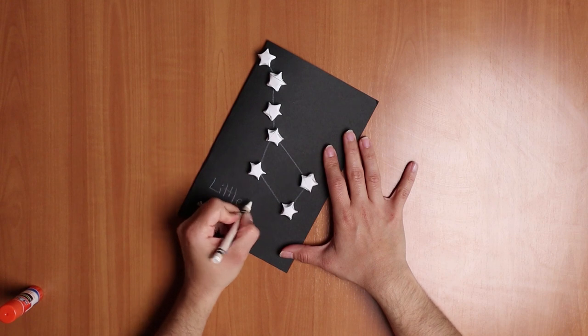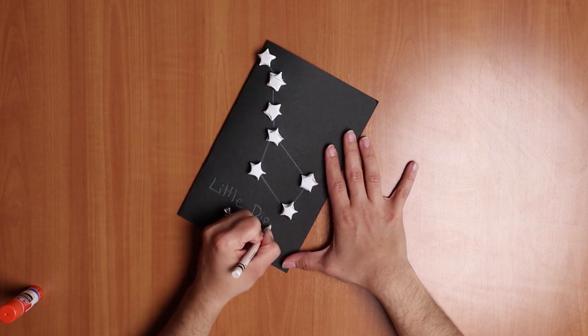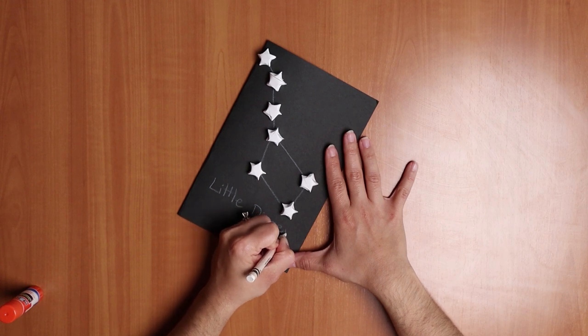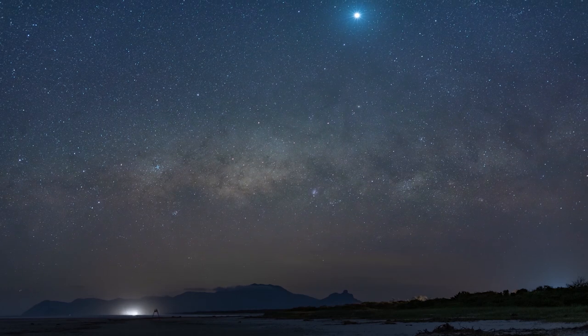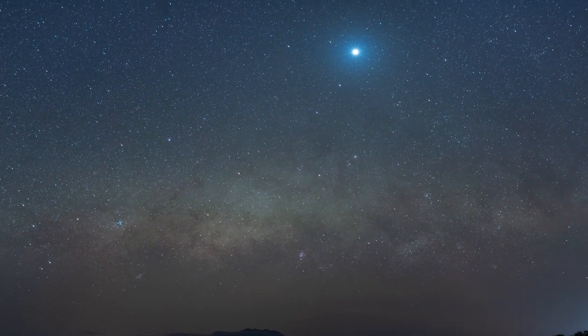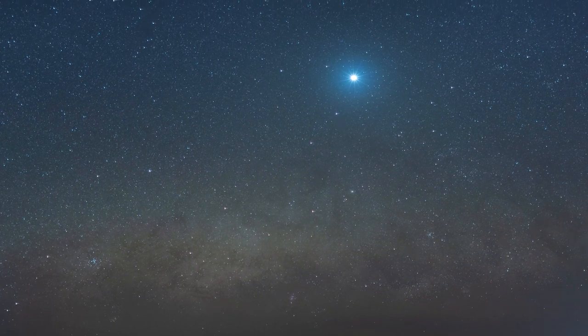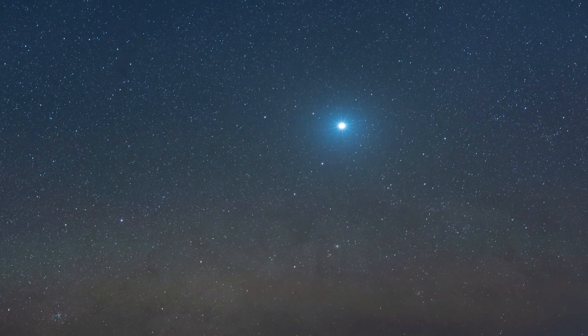The Little Dipper is one of the most well-known constellations. It is created by seven bright stars and is part of a larger constellation called Ursa Minor. It is home to the north star Polaris, which is the only star in the night sky that never changes positions. I am going to make a 3D constellation card of the Little Dipper as part of my demonstration.